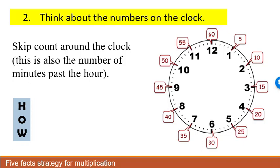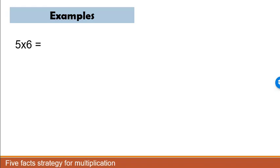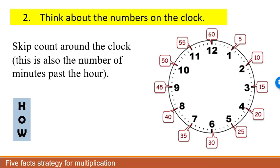So let's take a look at some examples. Five times six. Well, we might think about the six on the clock. The six is at the bottom. That's 30 minutes, which is half an hour. So this answer is 30.